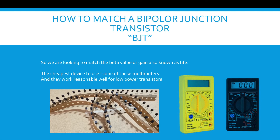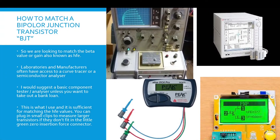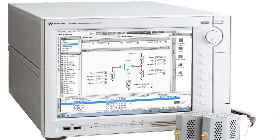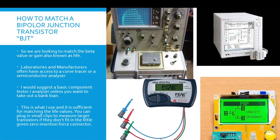Looking at the build guide, for the bipolar junction transistor we're looking to match the beta value or gain known as HFE, and also the VBE value. The cheapest device to get your HFE value is one of these cheap digital multimeters — they work reasonably well for low power transistors. Laboratories and manufacturers often have access to a curve tracer or component analyzer. I'd suggest a basic component tester like the one shown, or the PEAK DCA75, unless you want to take out a bank loan for professional equipment. The one on the bottom right is what I use — it's sufficient. You can plug in small clips to measure larger transistors if needed.